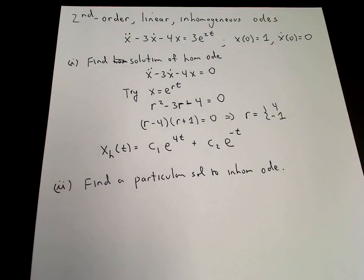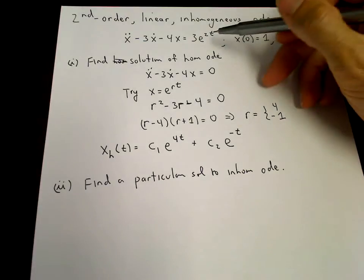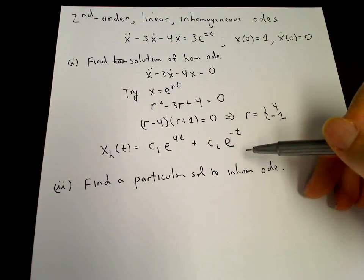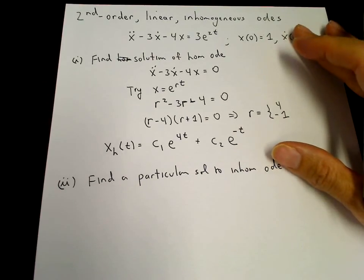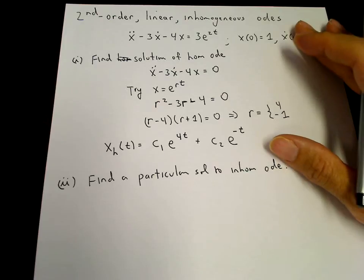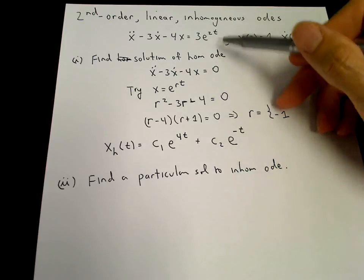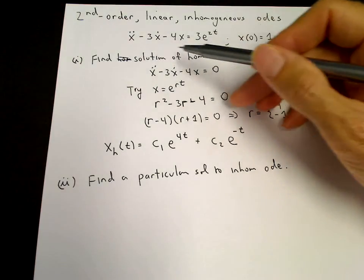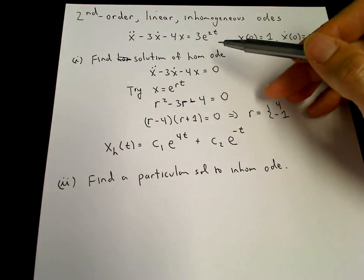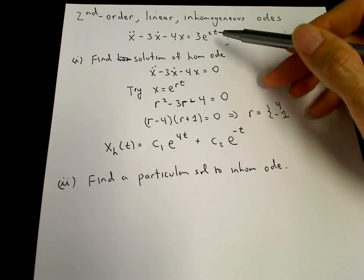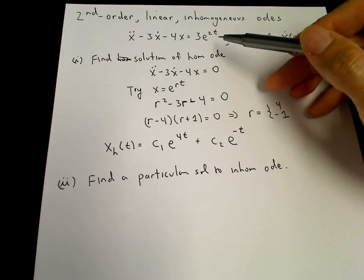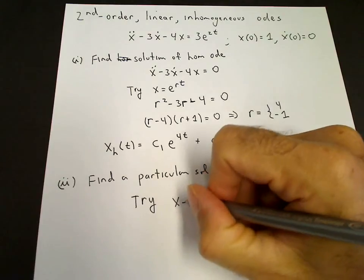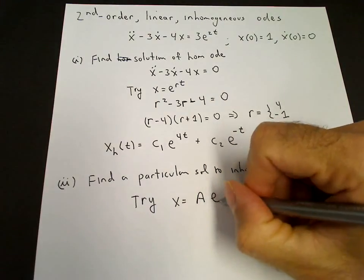The right-hand side is e to the 2t. You need to check that e to the 2t is not a solution of the homogeneous equation — otherwise you may run into trouble, and we'll see how to deal with that later. It's not. So we're looking for an ansatz for the particular solution such that we can convert the differential equation to an algebraic equation. Because the derivative of e to the 2t is 2 times e to the 2t, you keep getting e to the 2t back. We can try an ansatz of the form x equals some unknown constant a times e to the 2t.